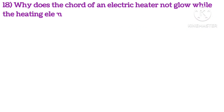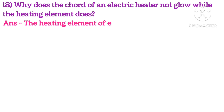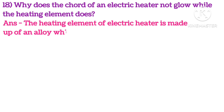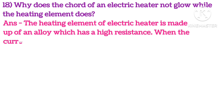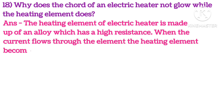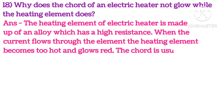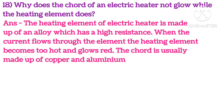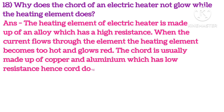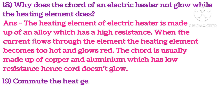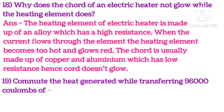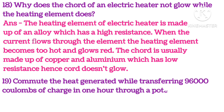Why does the cord of an electric heater not glow while the heating element does? The heating element of an electric heater is made of alloy which has higher resistance. When current flows, the heating element becomes very hot and glows red. The cord is usually made of copper or aluminum, which has lower resistance, hence the cord does not glow.